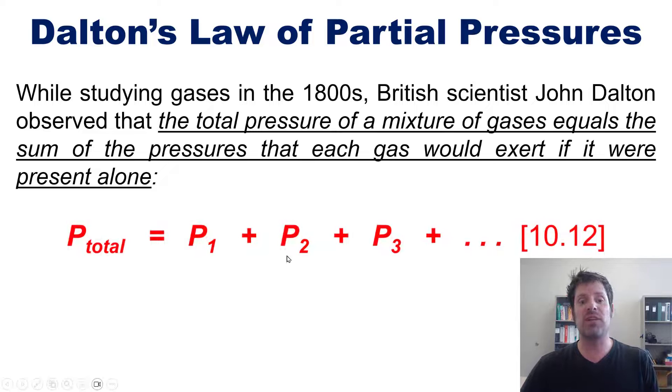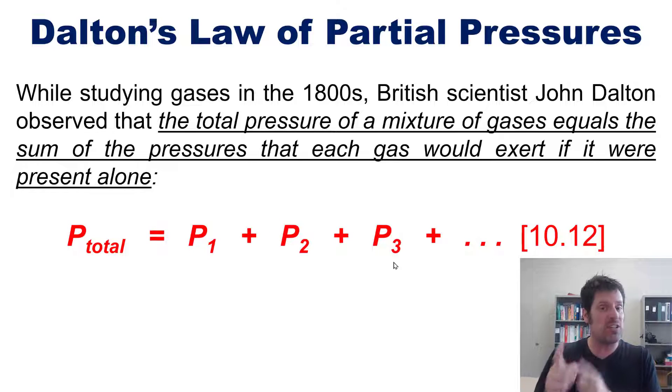In other words, if you have a bunch of different gases—let's say gas 1, gas 2, gas 3, and so forth—that each exerts a specific amount of pressure and you put all of them in the same container, the total pressure of all the gases combined is just equal to all of those individual pressures added up. Isn't that neat?